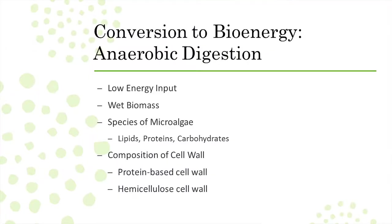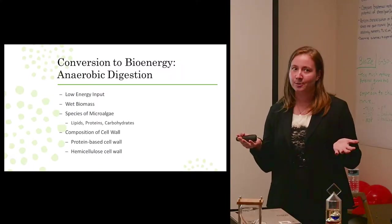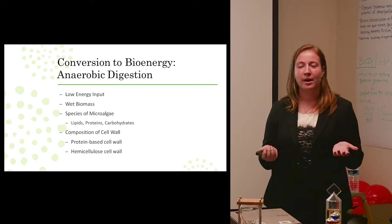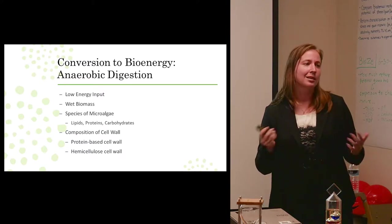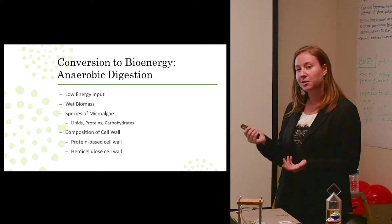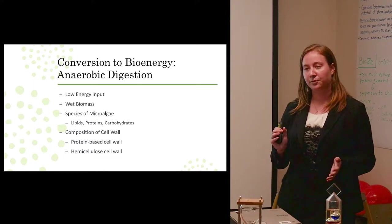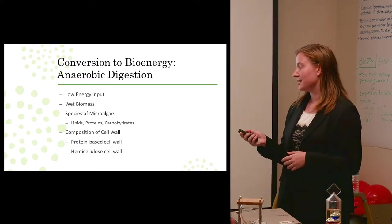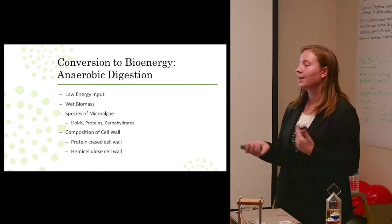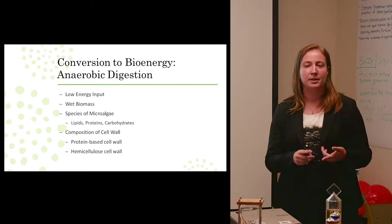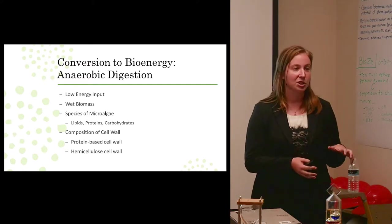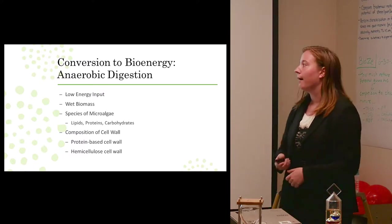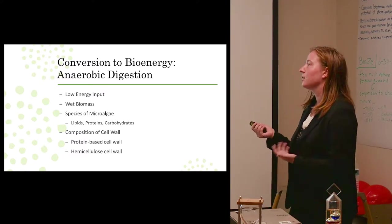So now we have this biomass. We are processing it through anaerobic digestion. And why anaerobic digestion? Well, it has a very low energy input and you can use wet biomass. So it doesn't require any type of extensive drying like other biofuels. For example, like biodiesel, you need to dry the algae first. You don't need to do that with anaerobic digestion. And there are a couple of different main characteristics of algae that really will impact the methane production. And that is the species of the algae and the composition of the cell wall. And the species of the algae will impact the lipids, proteins, and carbohydrate content. And as Blaze really touched on, those are the three main constituents that impact methane production, with lipids being the easiest to digest and carbohydrates being the most difficult.